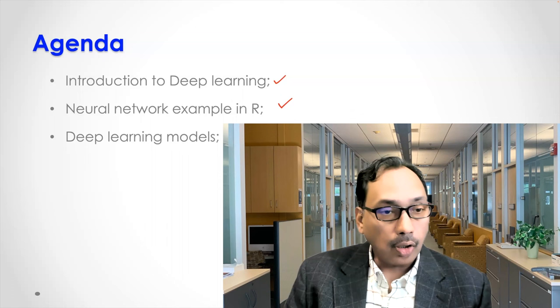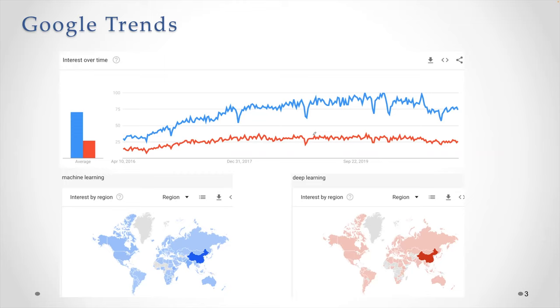If you search for machine learning and deep learning, blue one is obviously machine learning and red one is for deep learning. Since 2016, these searches have gradually increased and you can see geographically where people look for these keywords. So definitely there's a lot of interest in these topics.